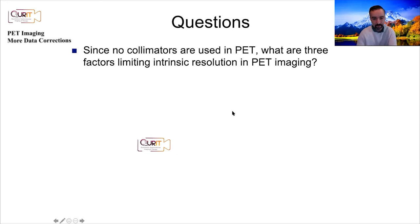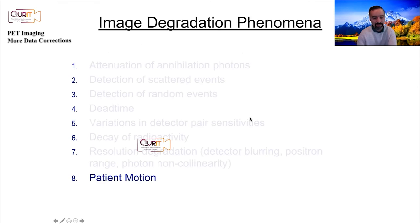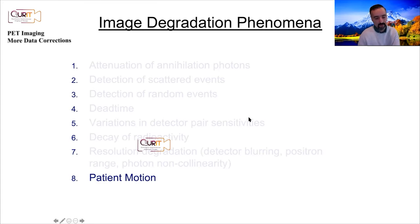Here's a question for you to try on your own: since no collimators are used in PET, what are the three factors that limit intrinsic resolution in PET imaging?